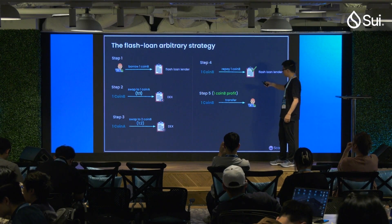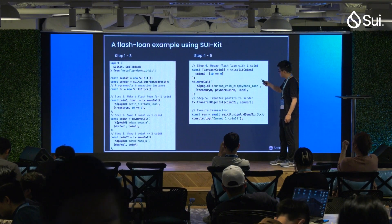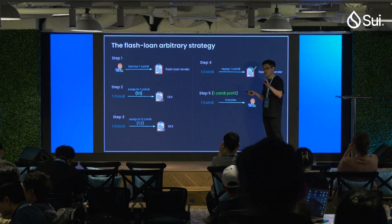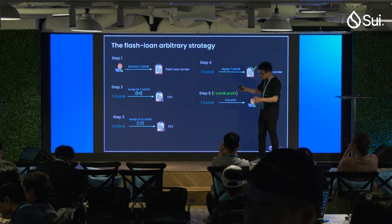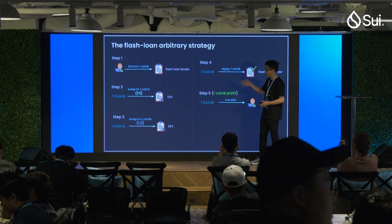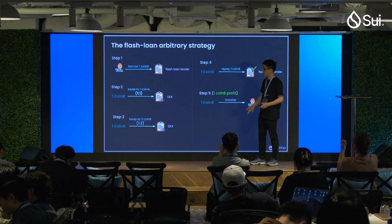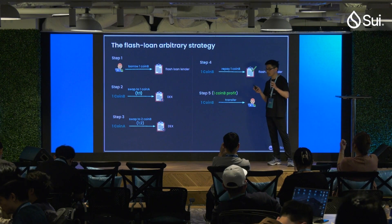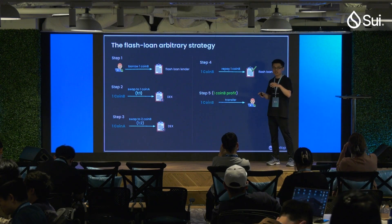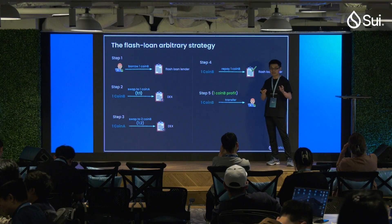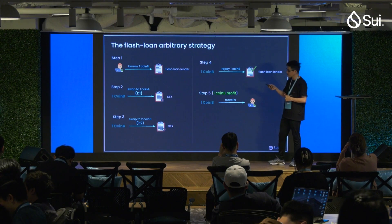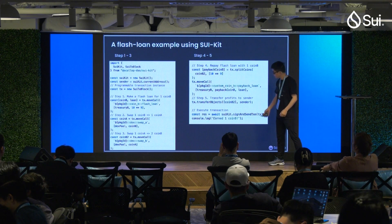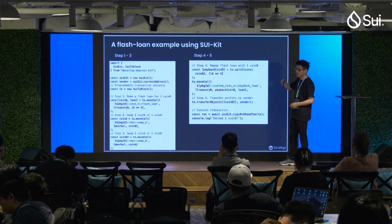The default way would be to write a contract that bundles these five steps in a single method and publish that module on the blockchain, then call that method to trigger the arbitrage process and get the profit. But now since we are on Sui, we have a better solution. This is a great feature already mentioned in previous talks — it's called the programmable transaction, which is one of my favorite features of the Sui network.